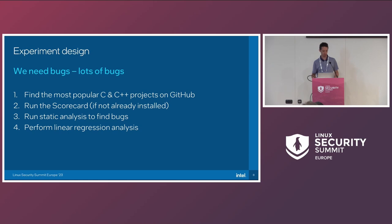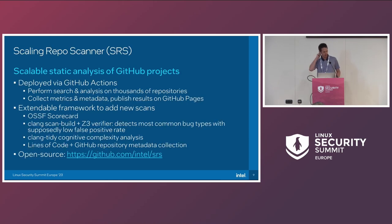Here's how we do the test: we find the most popular C and C++ repositories on GitHub, run the scorecard on them if not already done, then run static analysis to find bugs, and perform linear regression analysis to see if there's a correlation. We built tools to automate this. Being a fan of CI and GitHub Actions, we run this every month on GitHub Actions — search, run the analysis, collect results, and publish everything on GitHub Pages.